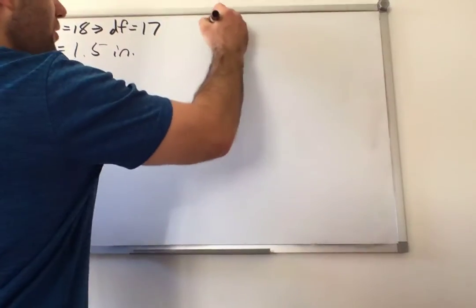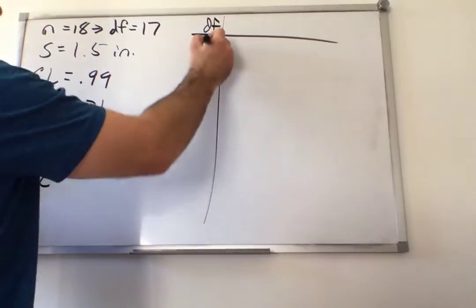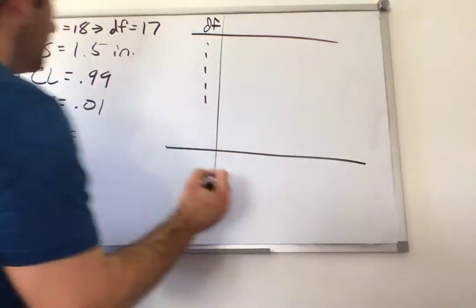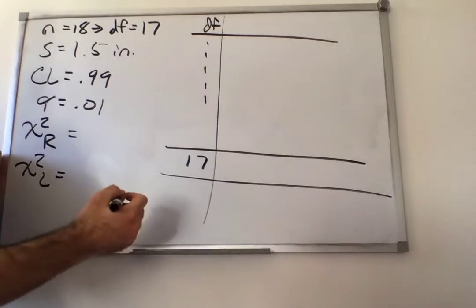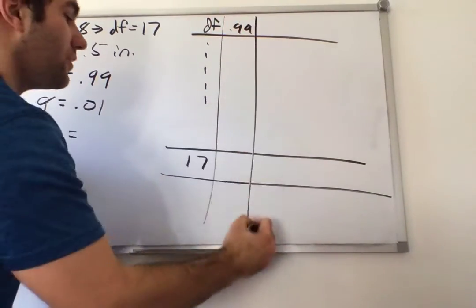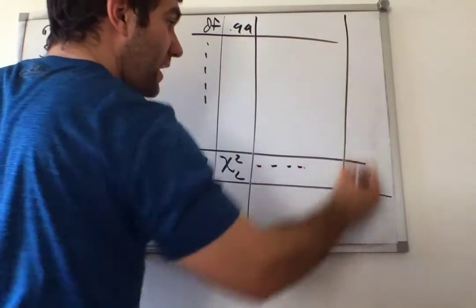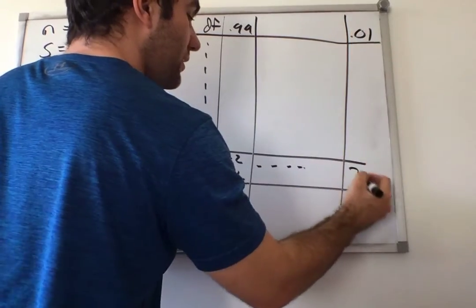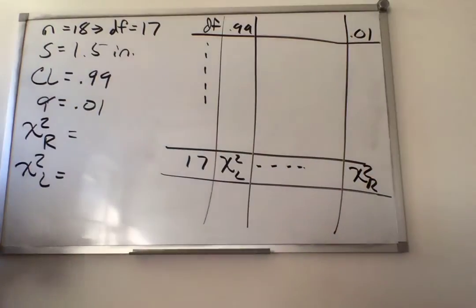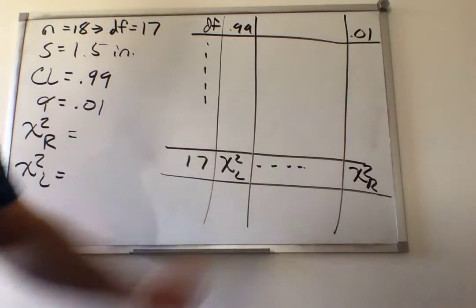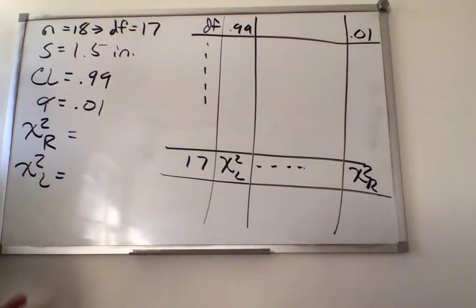So on your chart, you've got your degrees of freedom. You're going to go all the way down until you find the degrees of freedom of 17. 0.99 is right here. So this would be your chi-squared left value, all the way at the end of the table, 0.01, this is going to be your chi-squared right value. So take a moment, look at the chart, and you could pause the video and see if you could find those two values on your own. There is no calculator feature that will give us these values, we are going to have to use the table to figure these out.